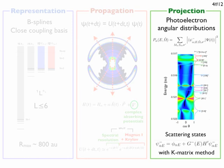At the end of the propagation, we extract the fully differential partial photoelectron distributions by projecting the wave function onto a set of multi-channel scattering states, which we obtain by solving the Lippmann-Schwinger equation with the K-matrix method.